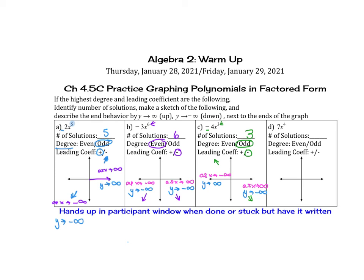Our last example is 7x to the fourth. The number of solutions is 4. The degree is even and the leading coefficient is positive, so both ends go up. On the left side, as x approaches negative infinity, y approaches positive infinity. On the right side, as x approaches positive infinity, y is also approaching positive infinity.